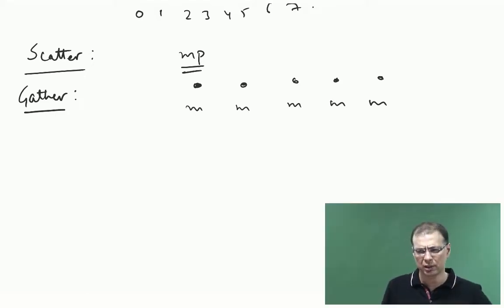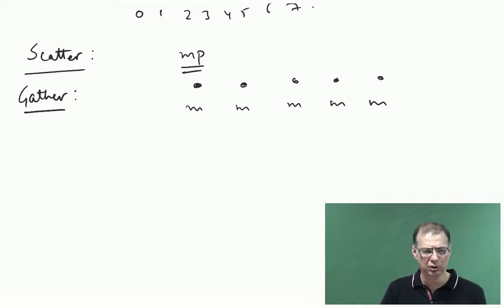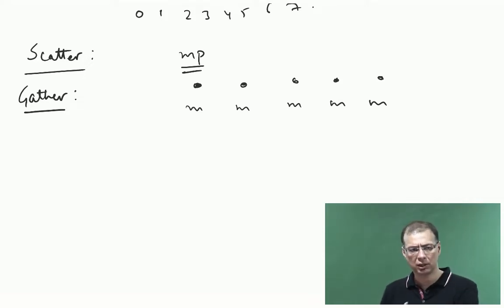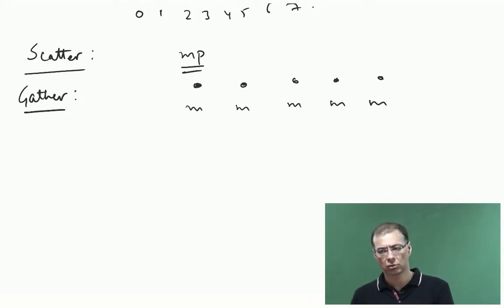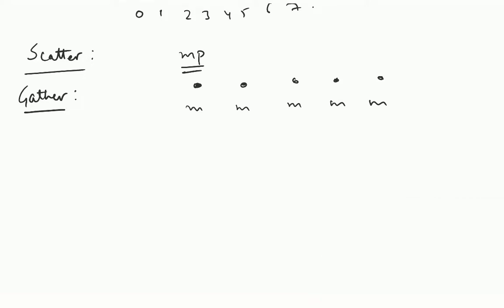So typically how is the scattering done? The first m elements go to node 0, the next m elements to node 1, the next m to node 2, and so on. That is how it happens.